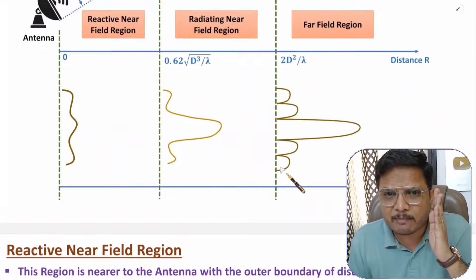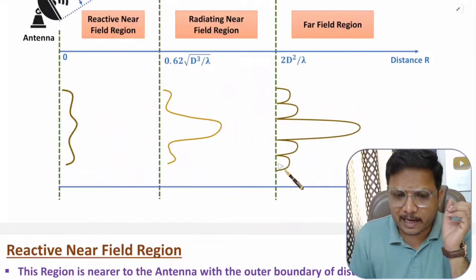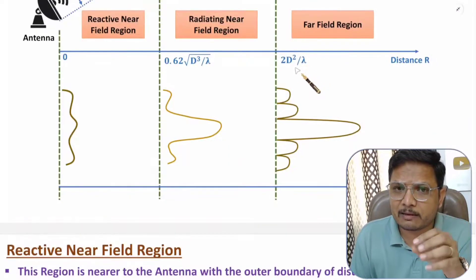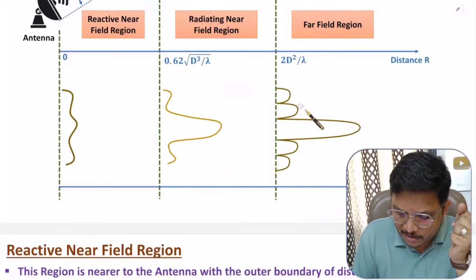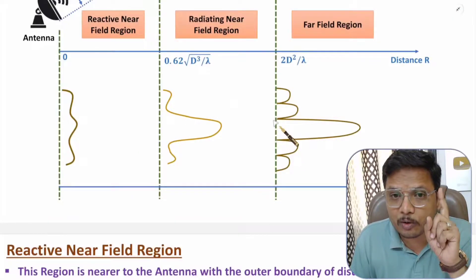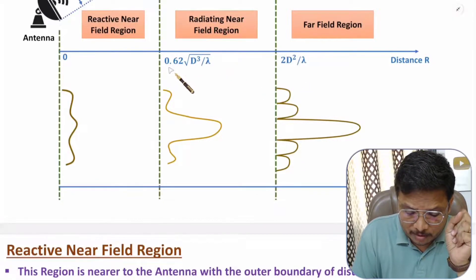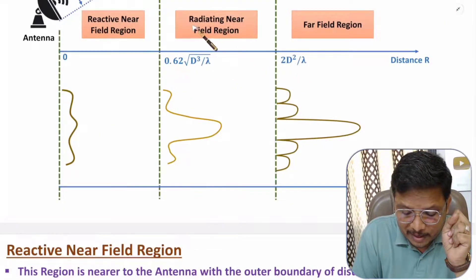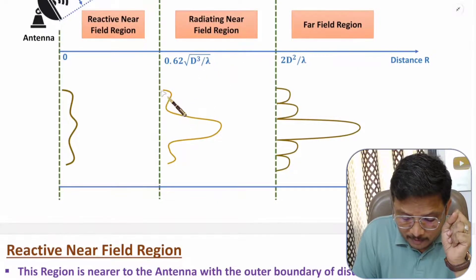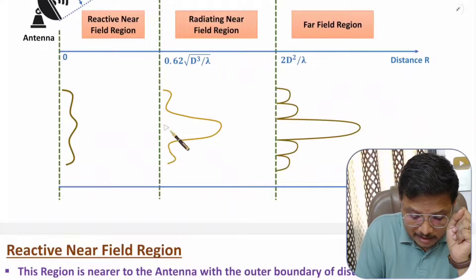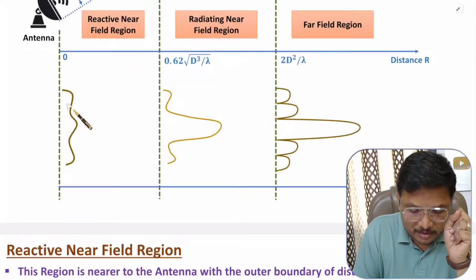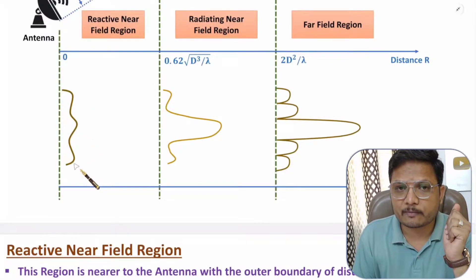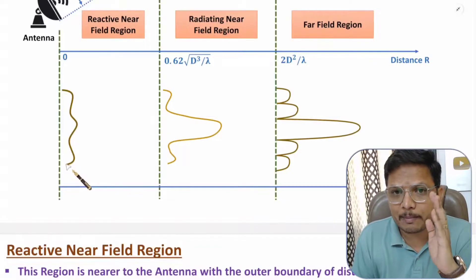There are no fixed boundaries, but the general rule is: if distance is greater than 2d²/λ you will have a proper radiation pattern. From 0.62√(d³/λ) to 2d²/λ we have the radiating near field region where somewhat a radiation pattern is formed, but in the reactive near field region the radiation pattern has randomness with no clear formation.